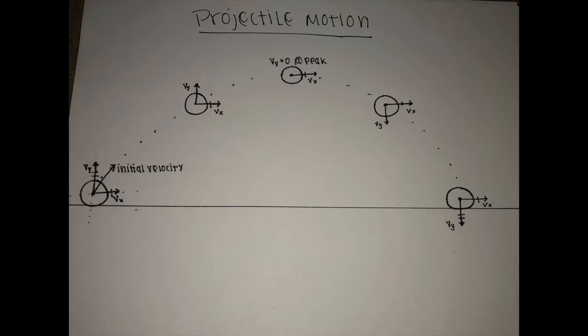At the end of its path, the object still has the same horizontal velocity, and the final vertical velocity is equal to the initial vertical velocity, but negative.